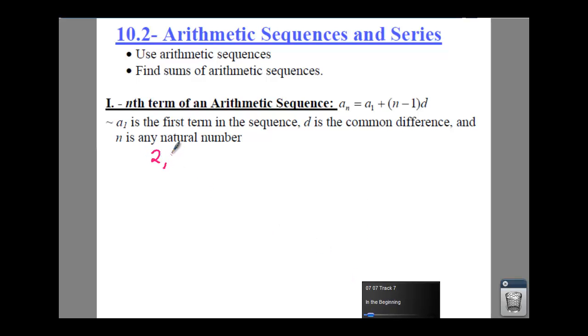So say you have like 2, 4, 6, 8, well each of those, and you keep going on and on and on, to go from one number to the other you're just adding 2. So that's an arithmetic sequence.